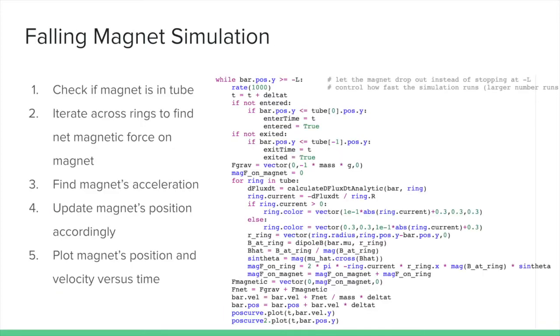Finally, we can perform a simulation of the magnet falling down the tube. Inside a while loop, we must check if the magnet is in the tube. Then, we can iterate across all rings to find the net magnetic force on the magnet.